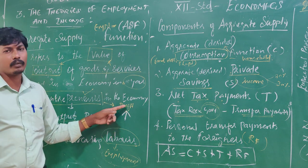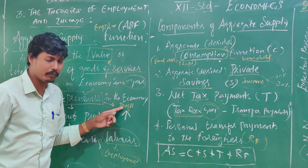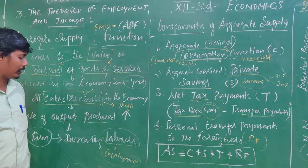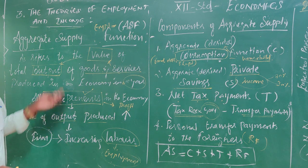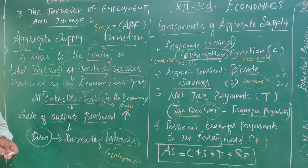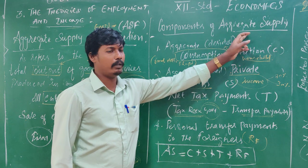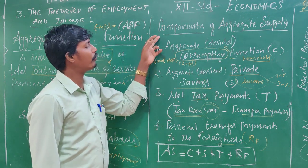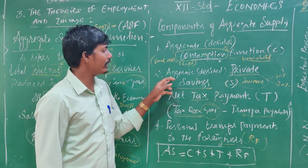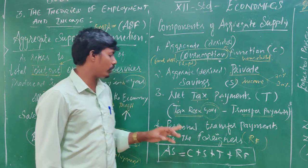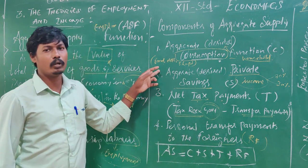Income and profit of the entrepreneur. Entrepreneur profit, labor, increase employment opportunity — and every time these are the components of aggregate supply. There are four components of aggregate supply: aggregate consumption function, aggregate private savings, net tax payments, and personal transfer payments to foreigners.